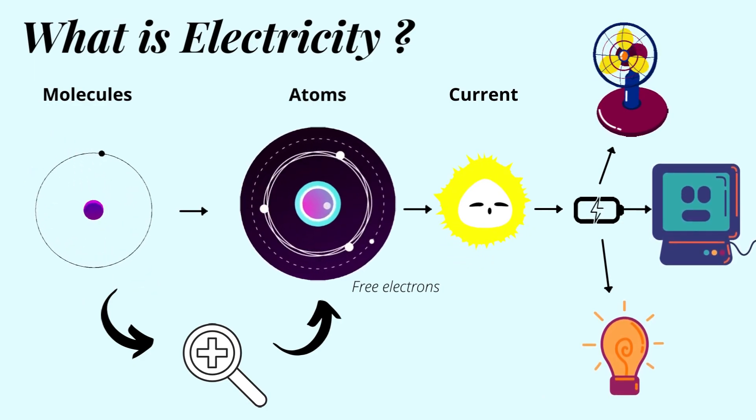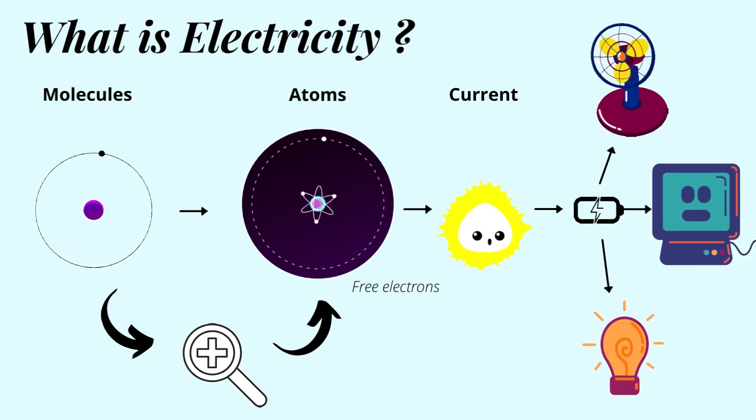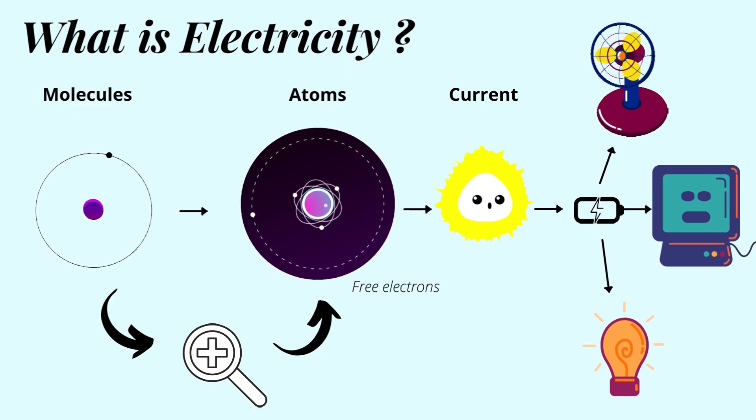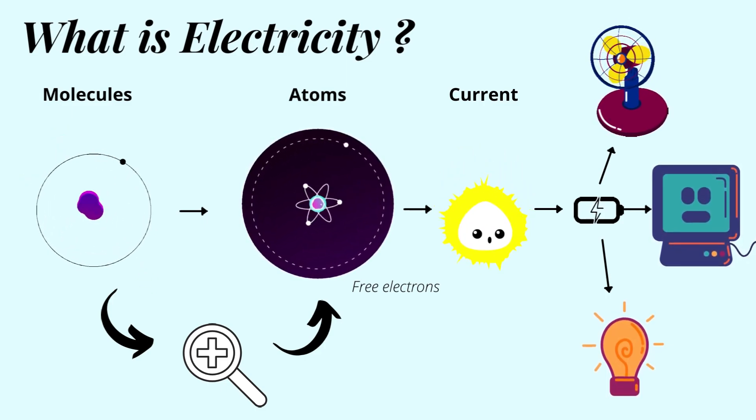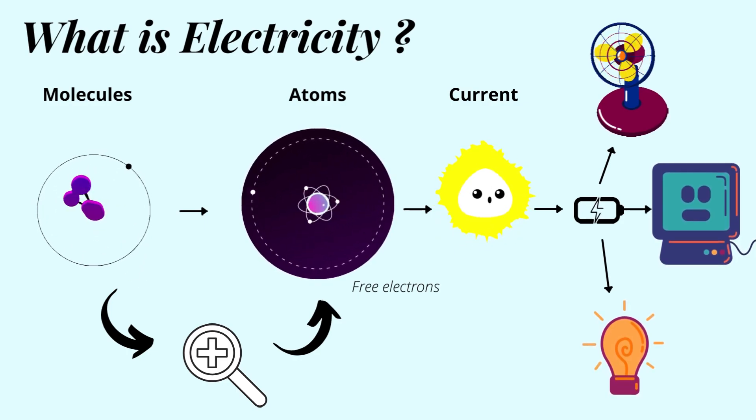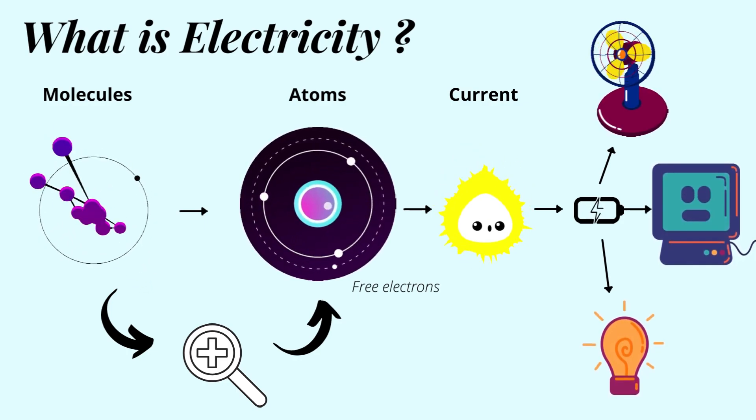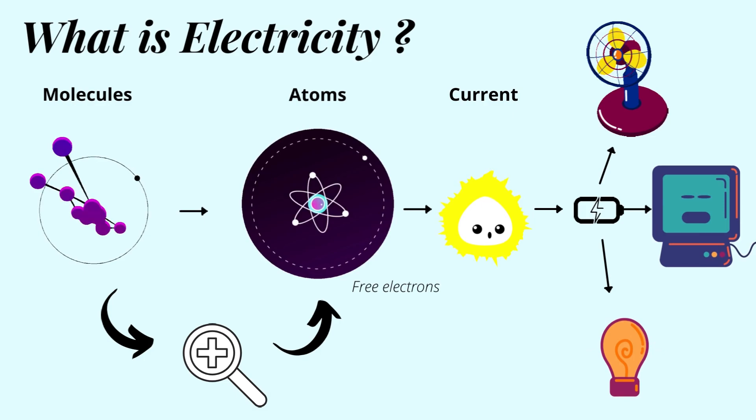Summarizing everything, when molecules are magnified, we get atoms. The electrons in the atom jump from one atom to the other and this results in electricity.